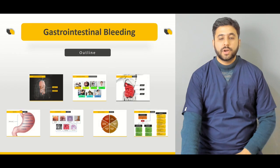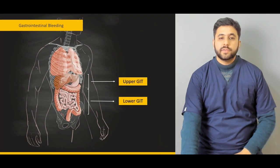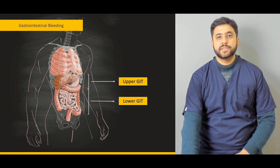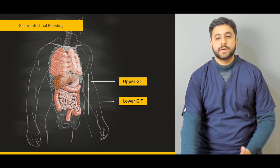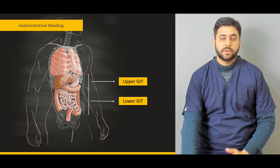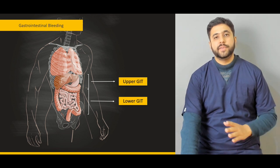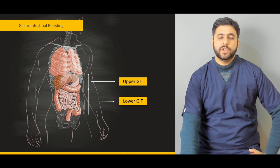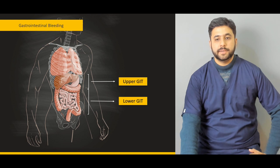Let me give you an overview of how we are going to proceed with this lecture. We are going to start with the anatomy. We are going to classify the GI tract into an upper GI and the lower GI tract — what are the various demarcations where we characterize it, and why do we characterize this bleeding into the upper GI bleed and the lower GI bleed.